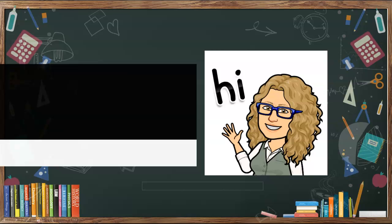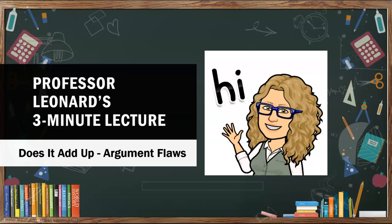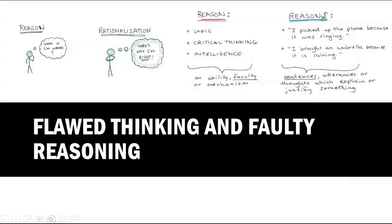Welcome to my three-minute lecture. This session will provide an overview of Chapter 7. We've already seen how an argument may be weakened by poor structure, logical inconsistency, and hidden assumptions. Here, we examine other fallacies, oversights, and assumptions. Note the examples — these represent common errors in reasoning.